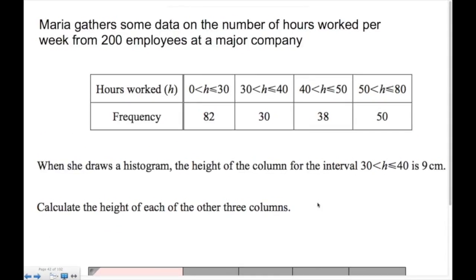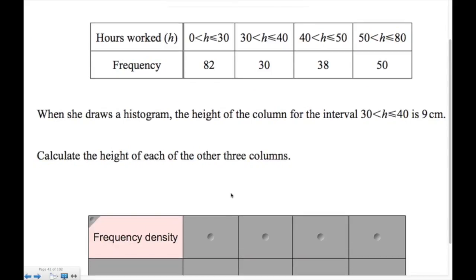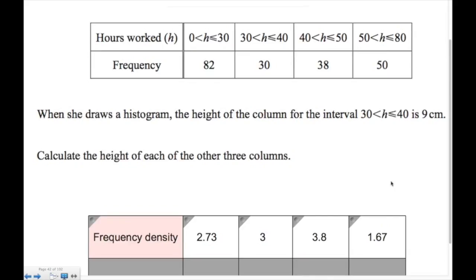Here's a slight variation — we haven't even got a histogram, we're just told that the height of the 30 to 40 interval is 9 centimeters when drawn. We need to find the heights of the other three columns. The frequency density for the 30 to 40 interval is 30 divided by 10, which equals 3. So the frequency density is 3.